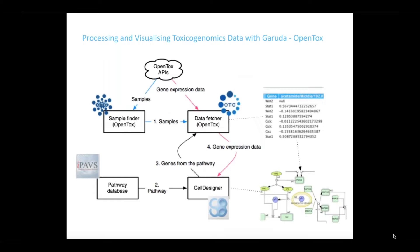Japanese toxicogenomics data on compound effects in liver cells in vitro and in vivo can be combined with workflows supporting the conversion of raw omics data to quantifications of most significant gene sets and visualizations of dose-dependent biological pathway perturbations.